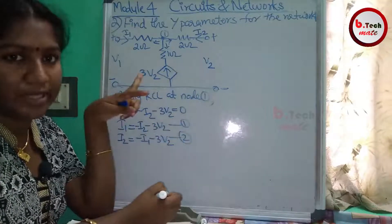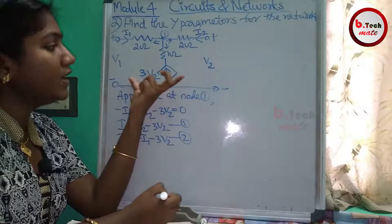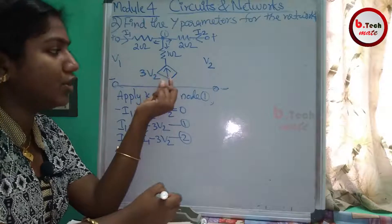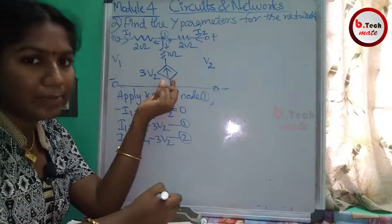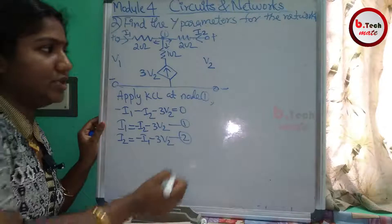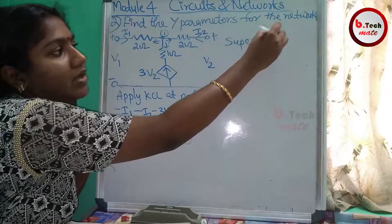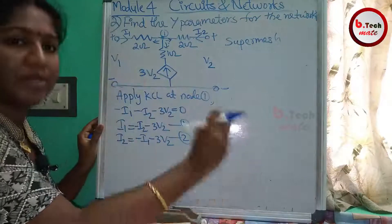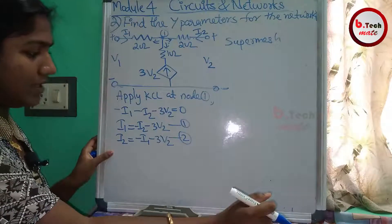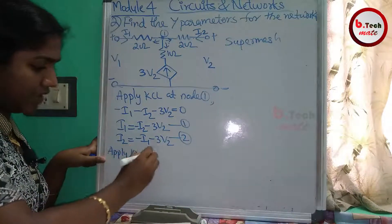We will short the output and input ports. We will work with these two equations. When we encounter a current source between two meshes, we use the concept called the supermesh. We need to apply KVL for the supermesh.